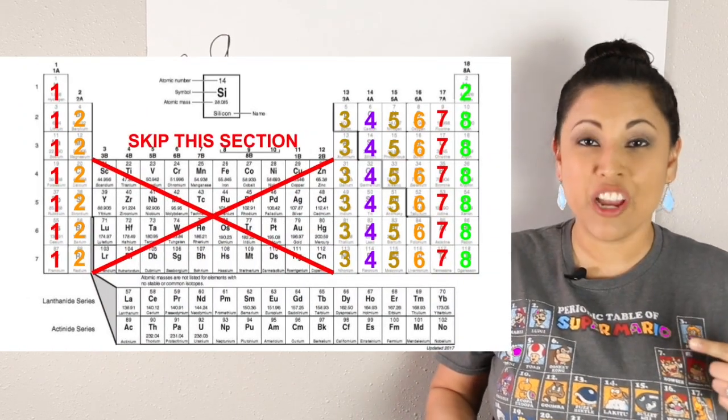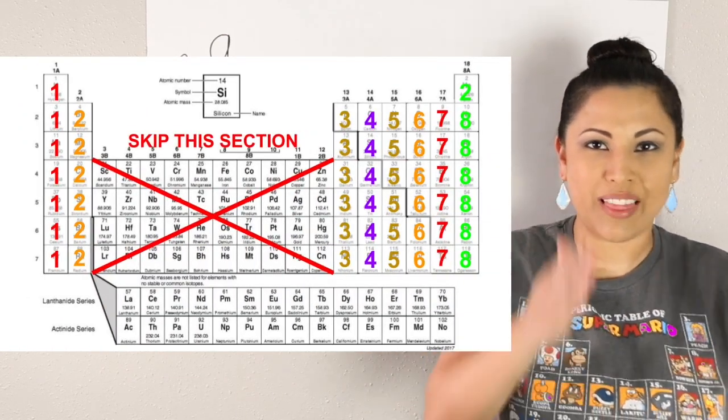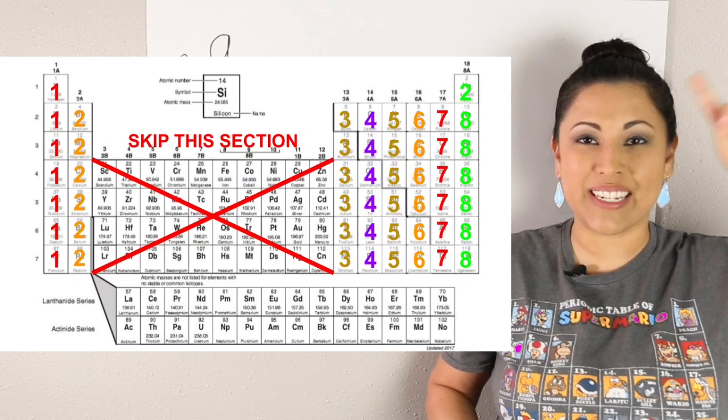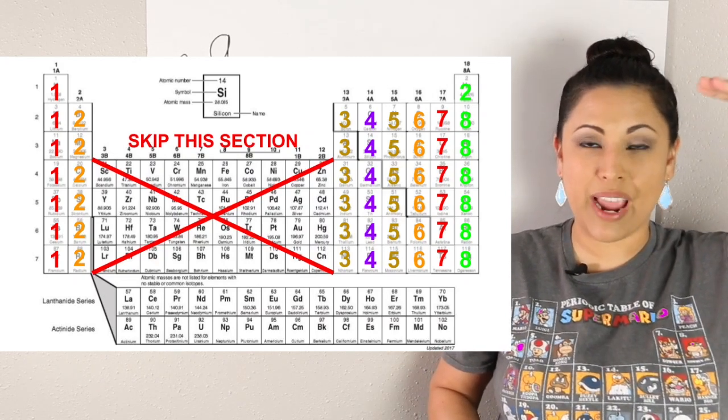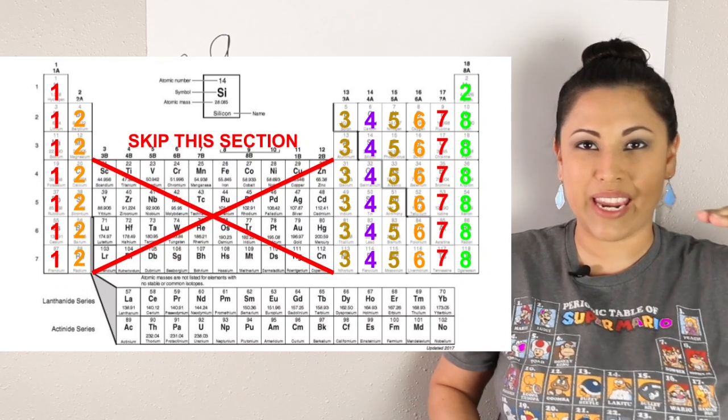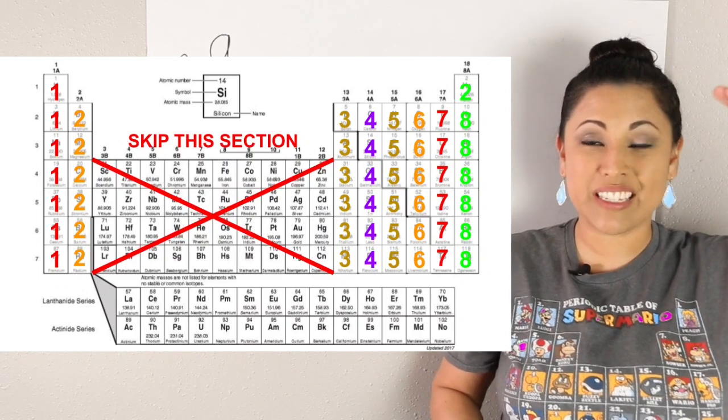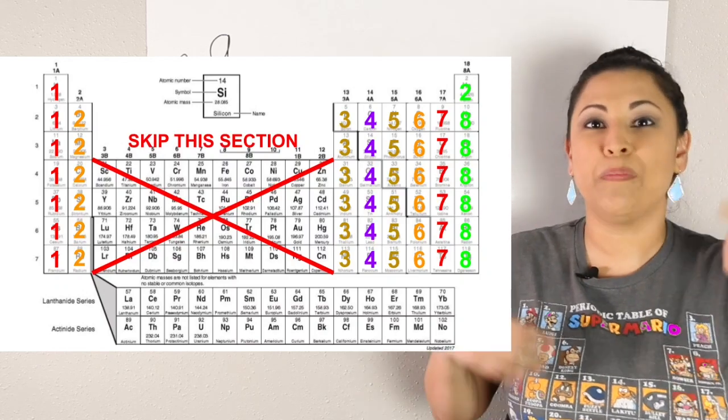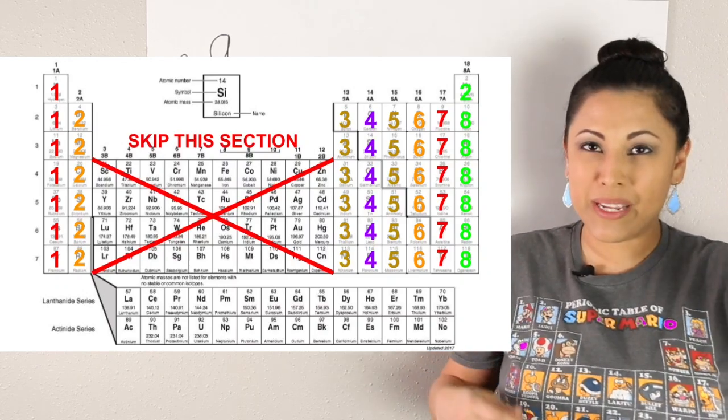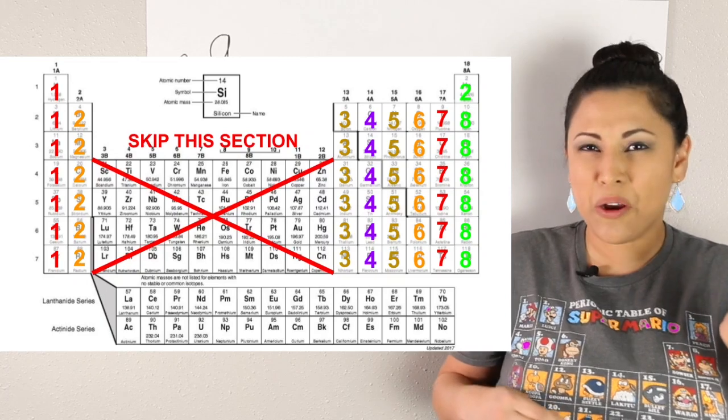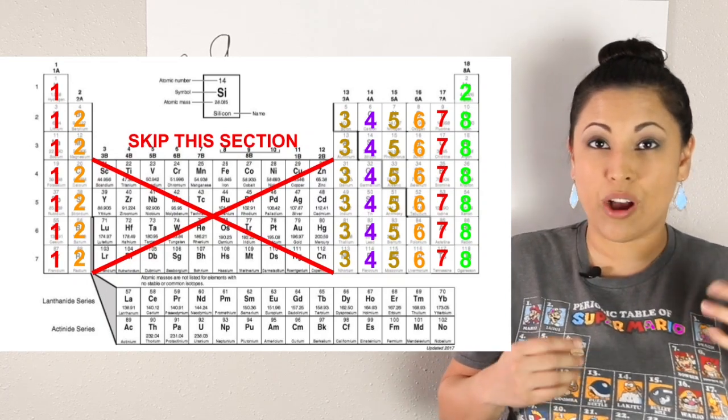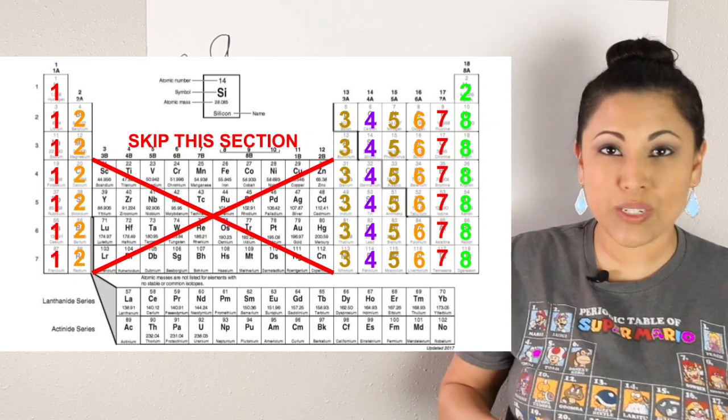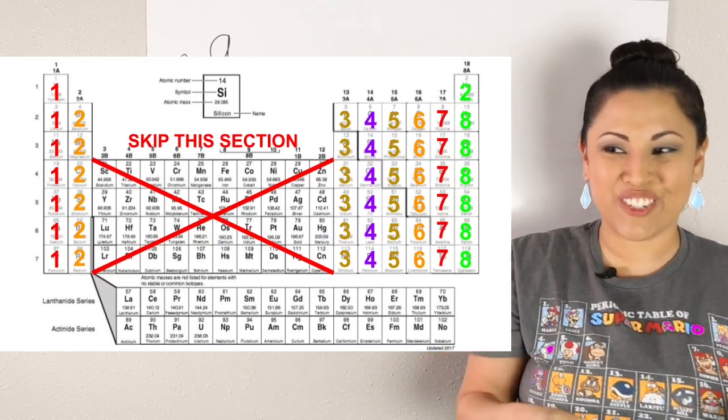Now, on this periodic table, you notice that the groups are labeled. Our groups go up and down, and they are labeled at the top. If you notice, there's a top number, and there's a number underneath it with an A next to it. The top number tells us our group number. The first column is group one, and then the next column is group two. This periodic table also has numbers on it. That's because our groups also tell us the number of valence electrons.